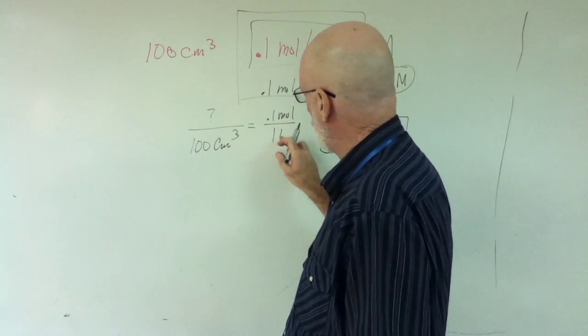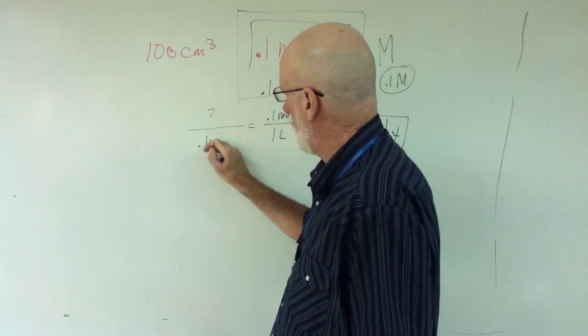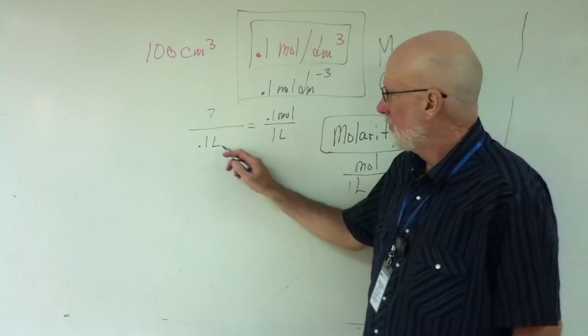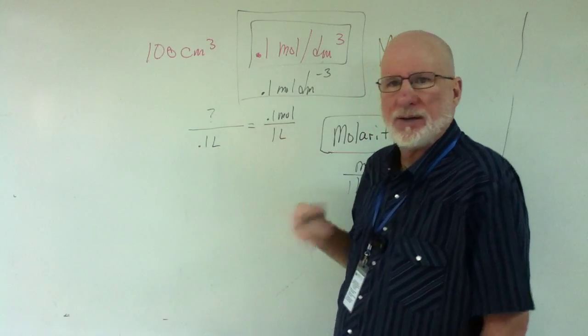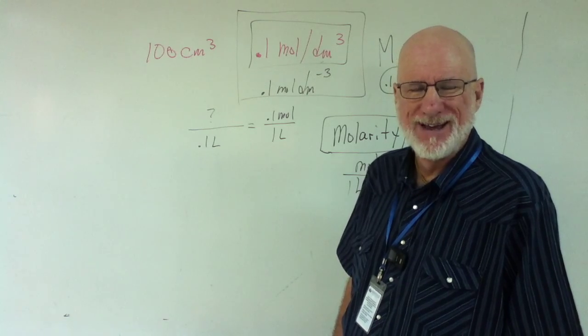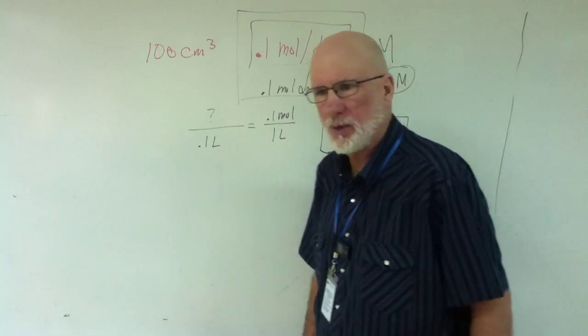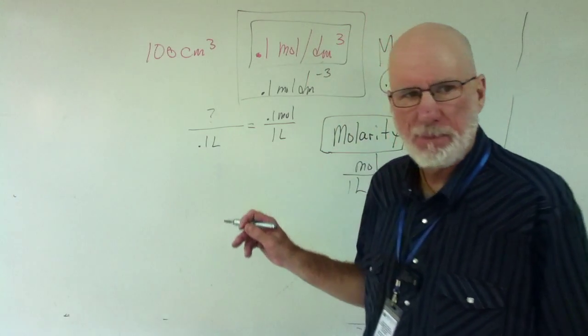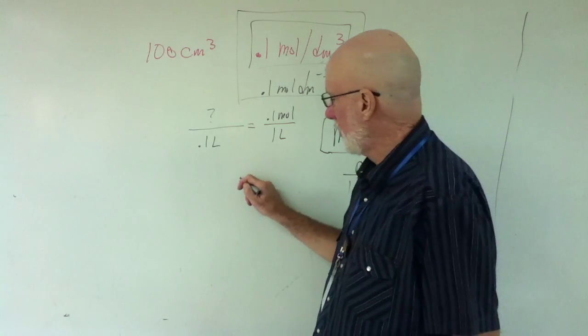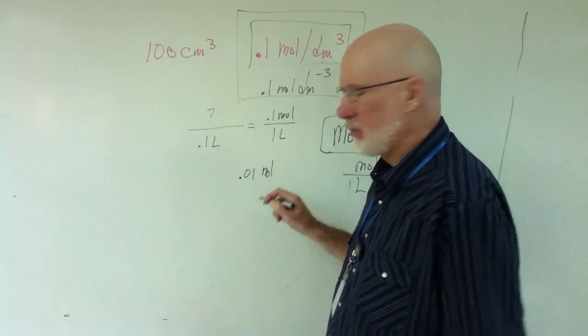So what you want to do is you want to either change this to milliliters. What I like to do is 0.1 liters. So 0.1 times 0.1 divided by 1 is what? 0.01. 0.01 moles of what? What's the chemical?